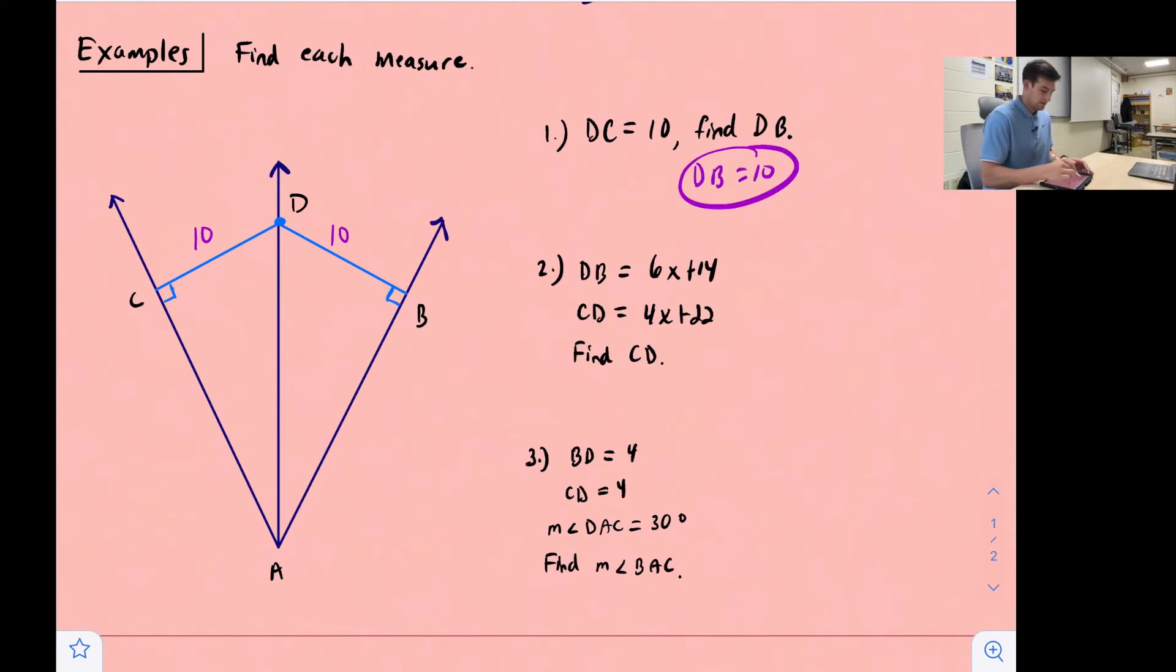All right, and now for question number two. It tells us DB is 6x plus 14, and CD is 4x plus 22. We want to find CD.